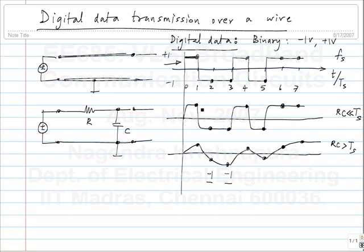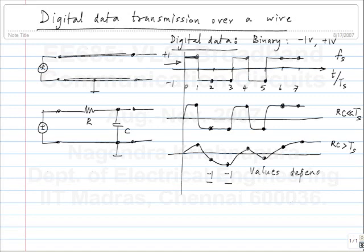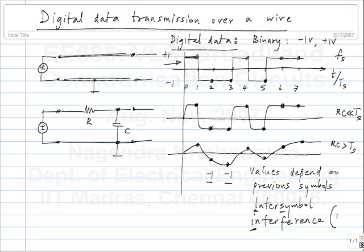Ideally it did not matter what the previous bit was - regardless of whether it was 1 or minus 1, if the data was minus 1 you would get minus 1 volt. Whereas in this case, if the previous data was plus 1 you get a somewhat smaller negative value; if the previous data was minus 1 you get a larger negative value closer to minus 1 volt. So the value received for each symbol depends on the previous symbol and in general many previous symbols - in theory every symbol transmitted before. This is known as inter-symbol interference, or ISI.